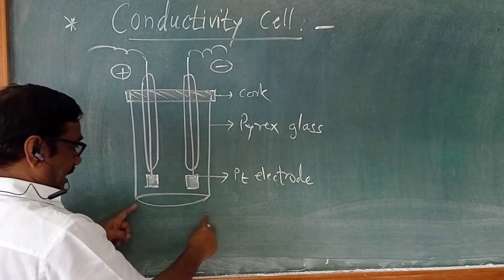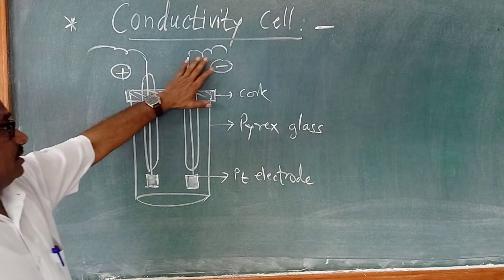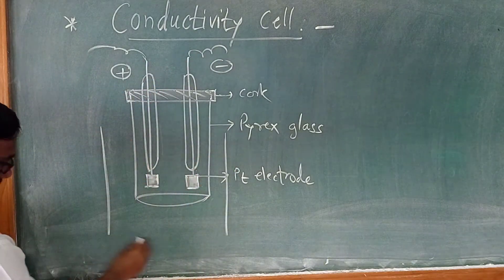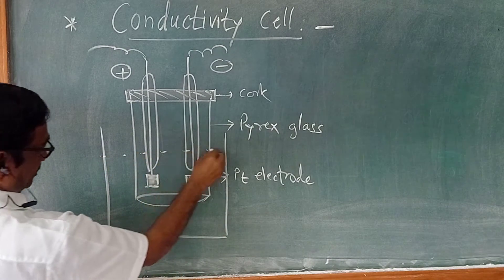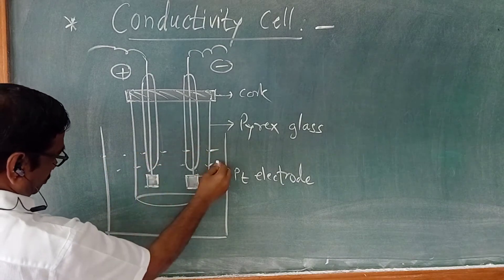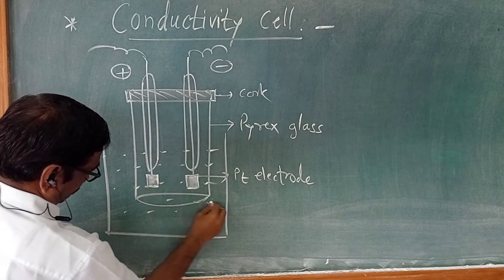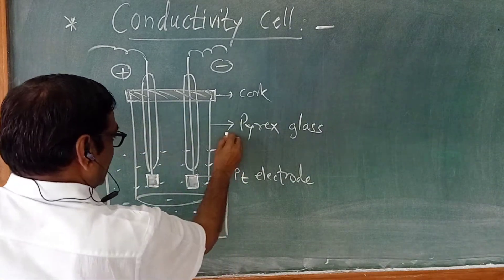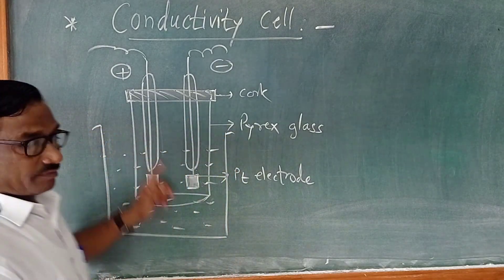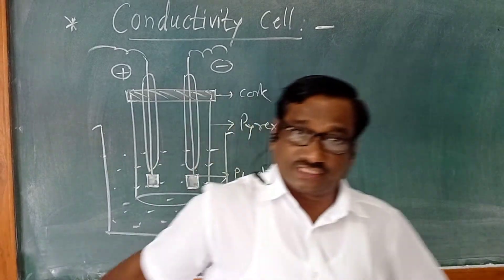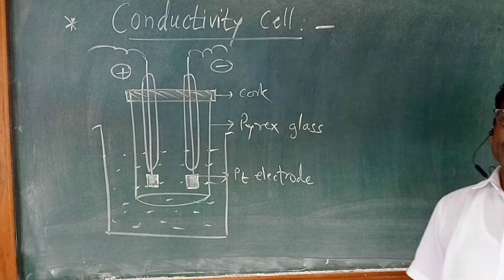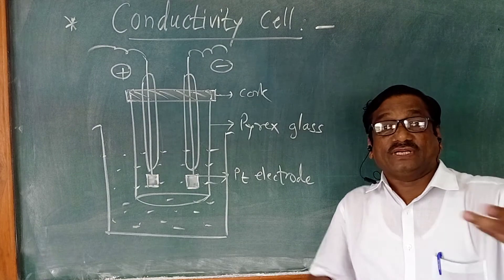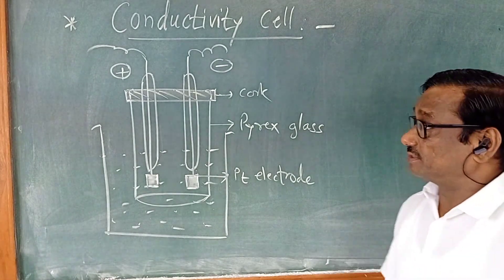This is the Pyrex glass and these are the electrodes. This conductivity cell is dipped into the solution whose resistance is to be measured. The solution is taken in the conductivity cell to measure the resistance. Now, there are different types of conductivity cells.